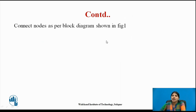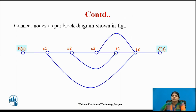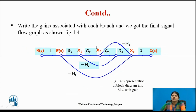Connect nodes as per the block diagram. Then write the gains associated with each branch to get the final signal flow graph. This is a representation of the block diagram into the SFG with gains G1, G2, G3, G4, and the feedback loop. In this way, you represent the block diagram into the signal flow graph.